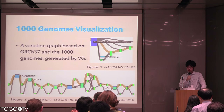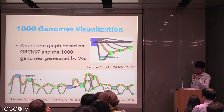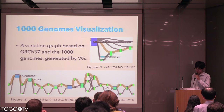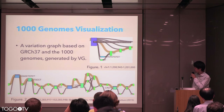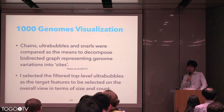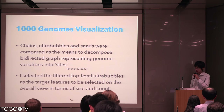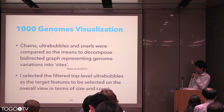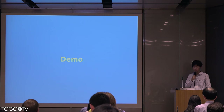Next, I will show you an example generated by the prototype. The input data is a variation graph based on GRCh37 and the 1000 Genomes data generated by VG. Those features are interesting sites including many SNPs. In this video, I demonstrate the SNPs on a region in the reference genome. The overall view is designed to select genomic features such as structural variation. In the 1000 Genomes data, I choose the top-ranked bubbles as the target feature, since the size and count of the bubble are suitable to visually explore. Then, I will show you a demonstration of the prototype.